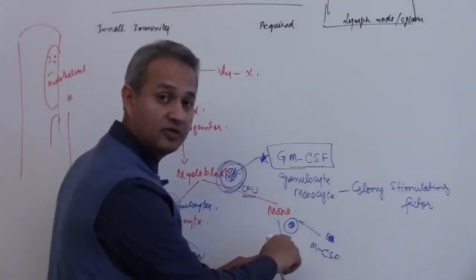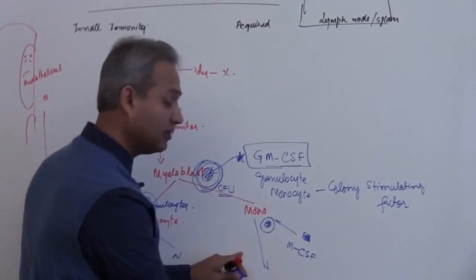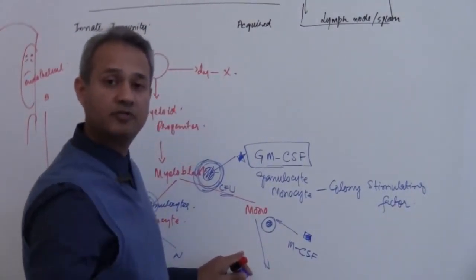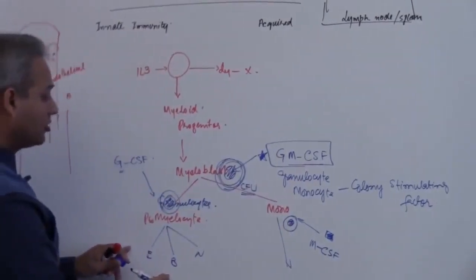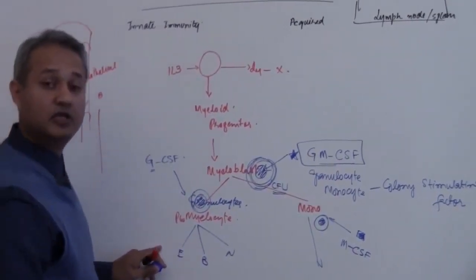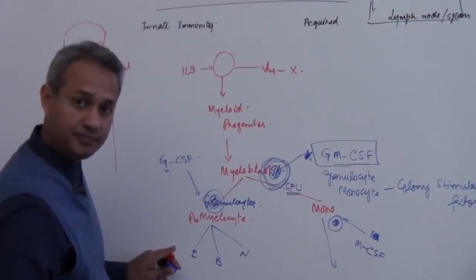M-CSF is going to act on the monocyte and what does that mean? More monocyte, more macrophages. When do you think we need more monocyte and macrophages? In the chronic infections. When do we need more neutrophils? In the acute infections.